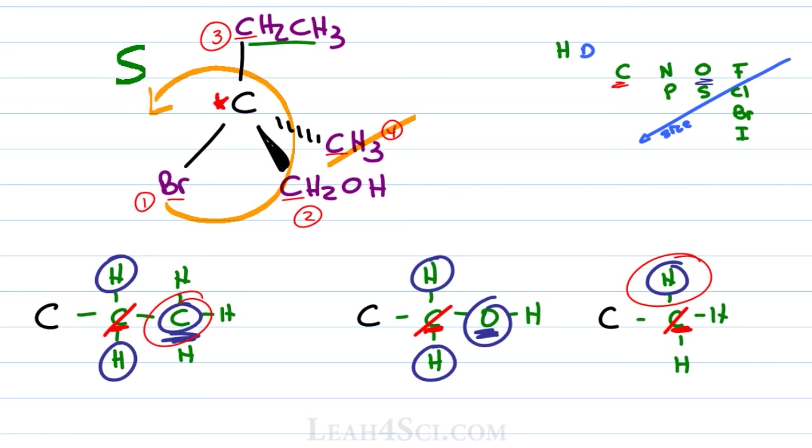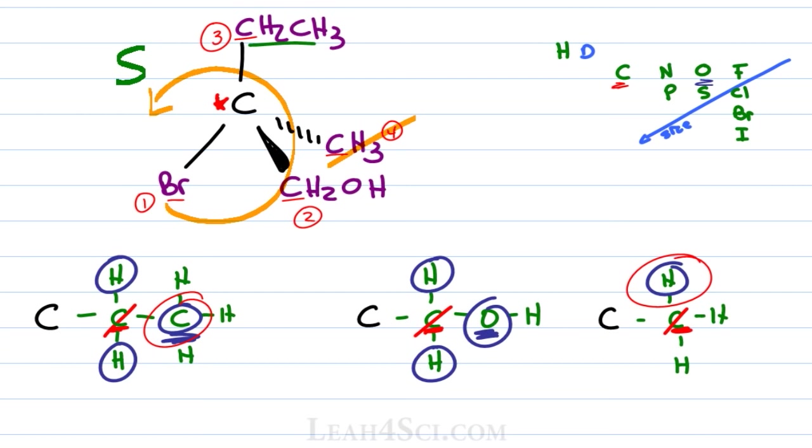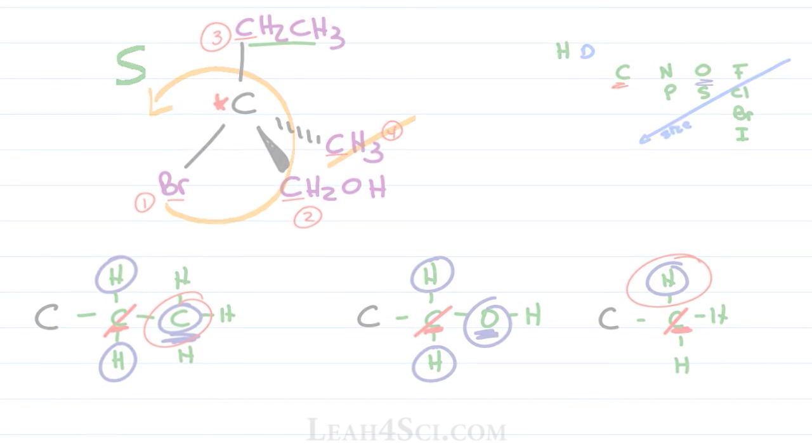But what if your molecule doesn't look this pretty and isn't set up this nicely? What if you're given a molecule in line structure, for example, 2-butanol where you have an alcohol on carbon number two and you're asked to find if it's R and S. We're gonna go through the same four steps. Step number one, rank. We have our little cheat guide. We identify the chiral carbon, the SP3 hybridized carbon with four unique substituents.